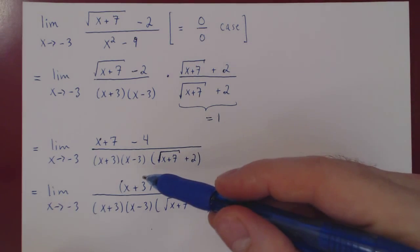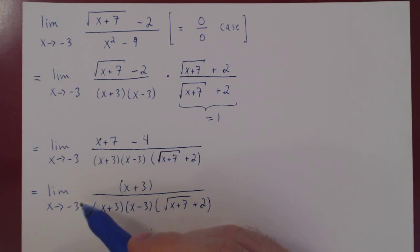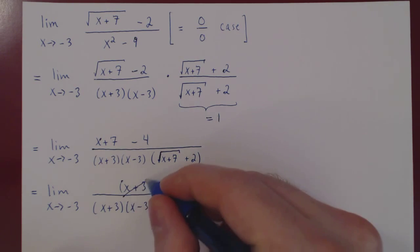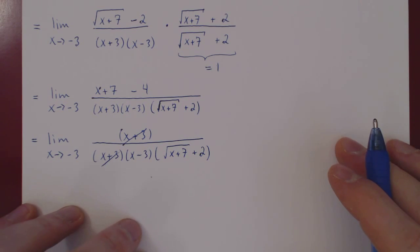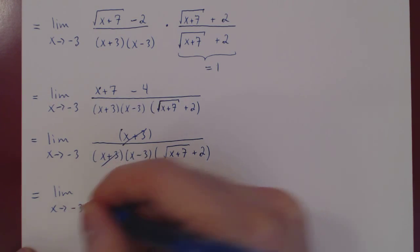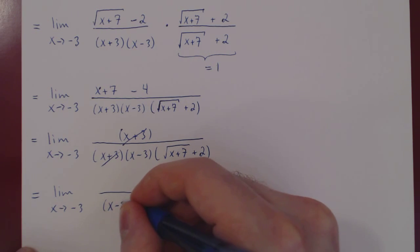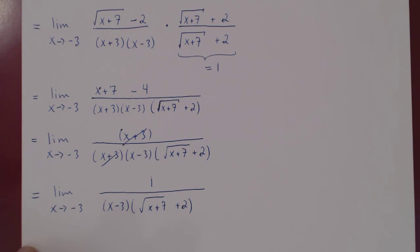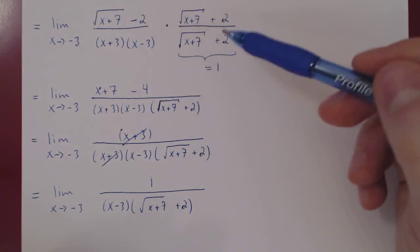Now we have a common factor of x plus 3 on top and on the bottom. As x is approaching negative 3, x is very close to negative 3 but never exactly negative 3, so x plus 3 is not exactly 0, and so we can cancel it. We'll have now a trivial limit: we're left with 1 on the numerator over x minus 3 times the root of x plus 7 plus 2. This is what we obtained after factoring the original quadratic polynomial and using conjugation.